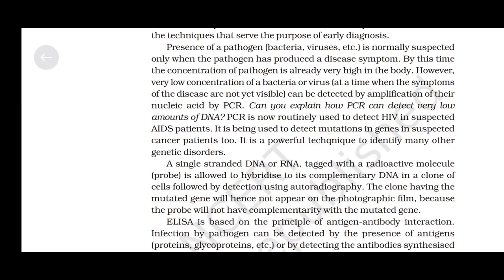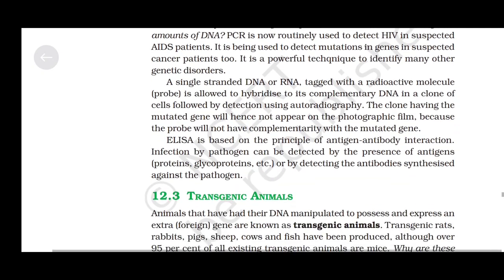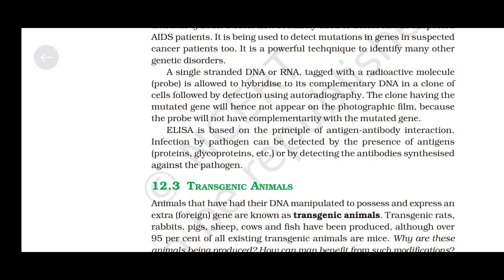PCR is now routinely used to detect HIV in suspected AIDS patients and to detect mutations in genes in suspected cancer patients; it is a powerful technique to identify many other genetic disorders. A single-stranded DNA or RNA tagged with a radioactive molecule (probe) is allowed to hybridize to its complementary DNA in a clone of cells, followed by detection using autoradiography. A clone having the mutated gene will not appear on the photographic film because the probe will not have complementarity with the mutated gene. ELISA is based on the principle of antigen-antibody interaction; infection by a pathogen can be detected by the presence of antigens (proteins, glycoproteins, etc.) or by detecting antibodies synthesized against the pathogen.